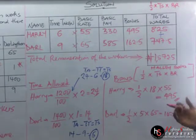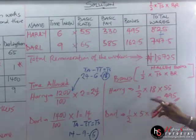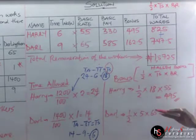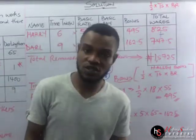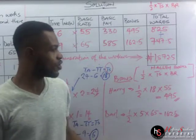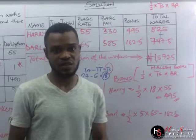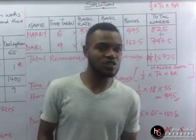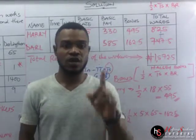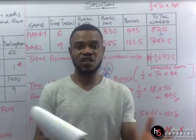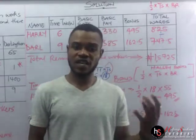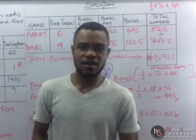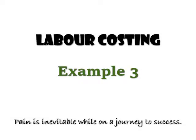Take note of the steps: how we got the new time allowed, how we determined the time saved using time allowed minus time taken, and how we followed through the process. For Lasportech students, this is how the majority of your questions are solved. Try to rewind and pause this video to write things down. One more video is left which will give you a general knowledge on labor costing. Do have a good day — thank you.